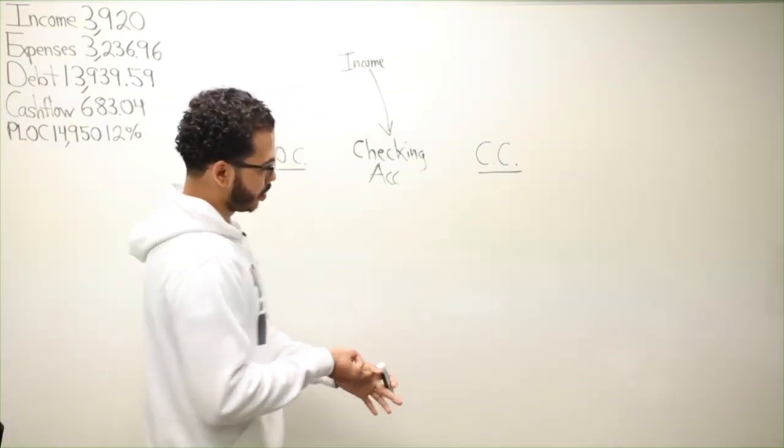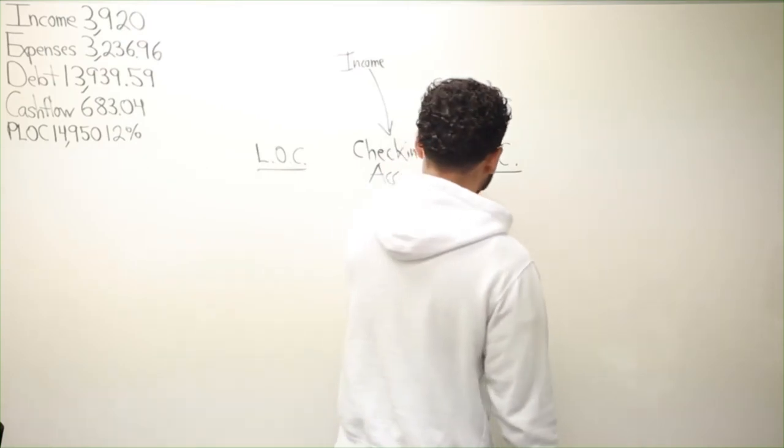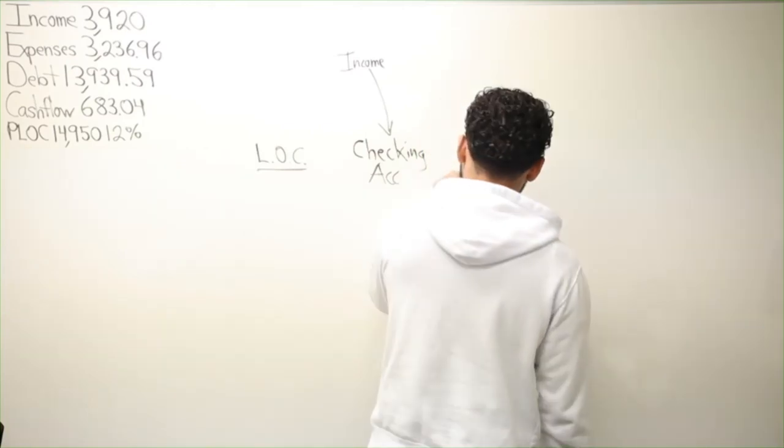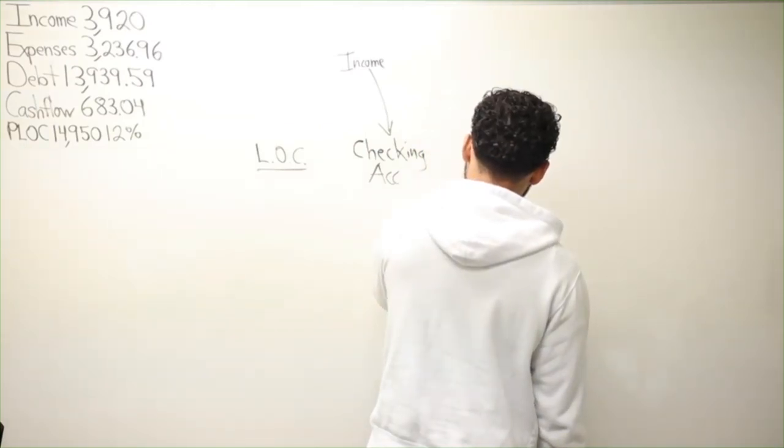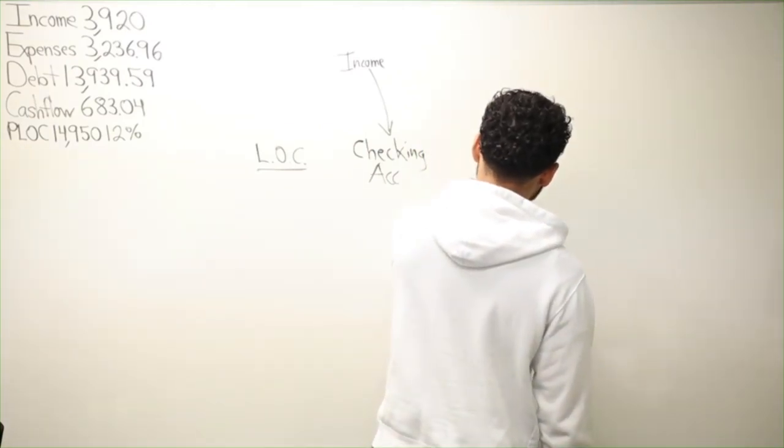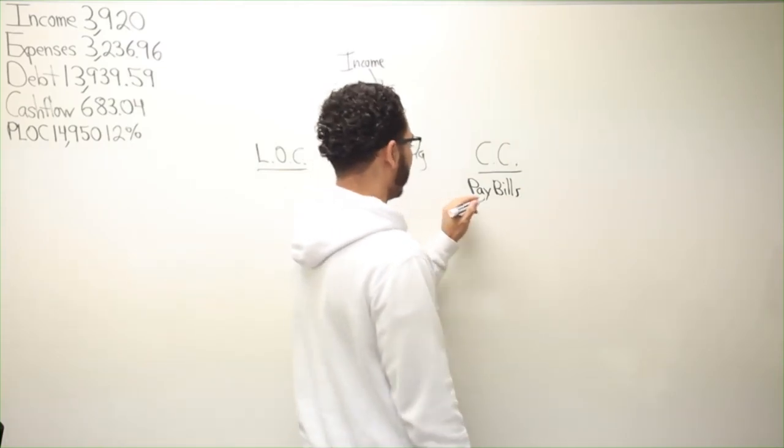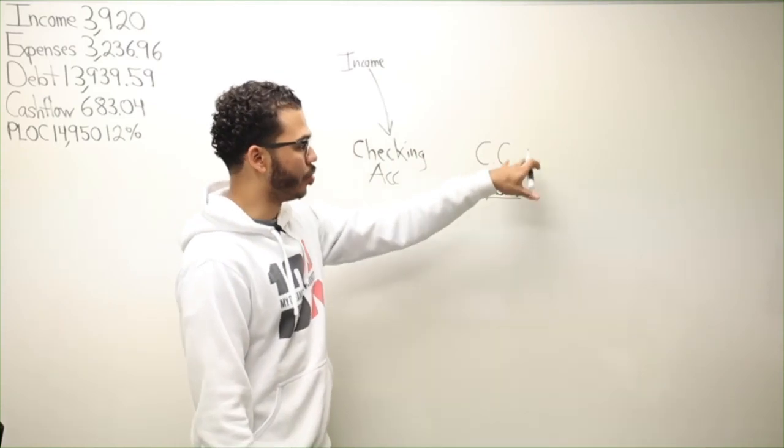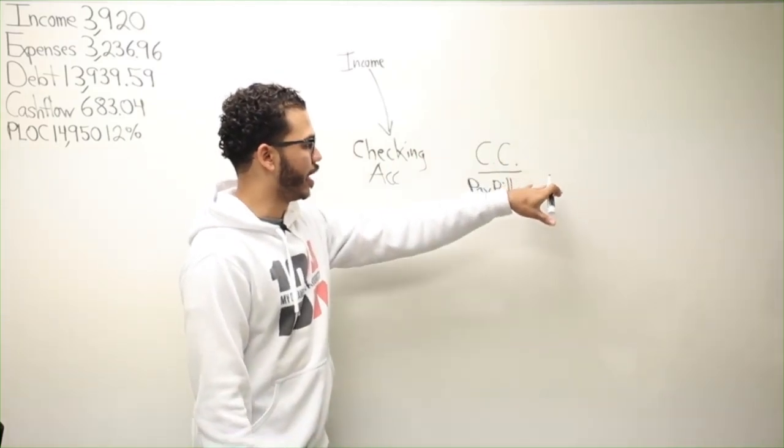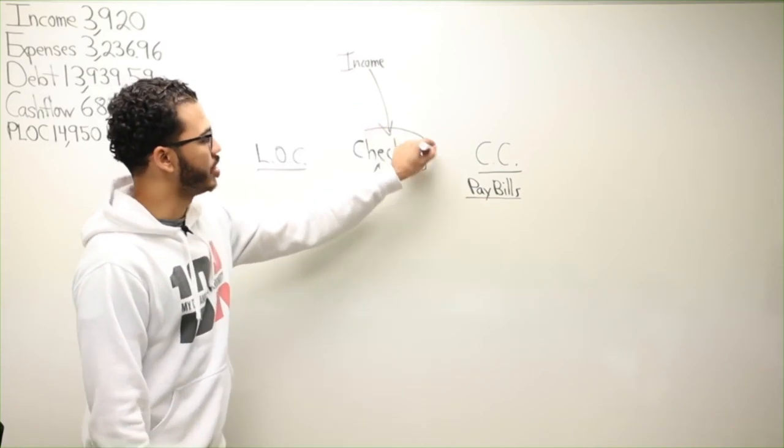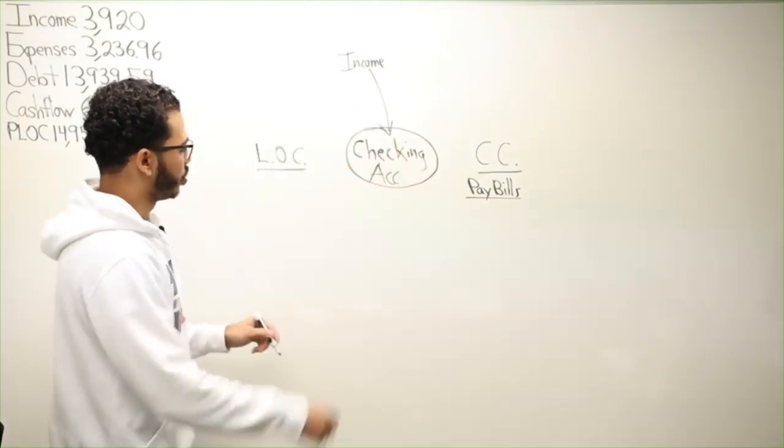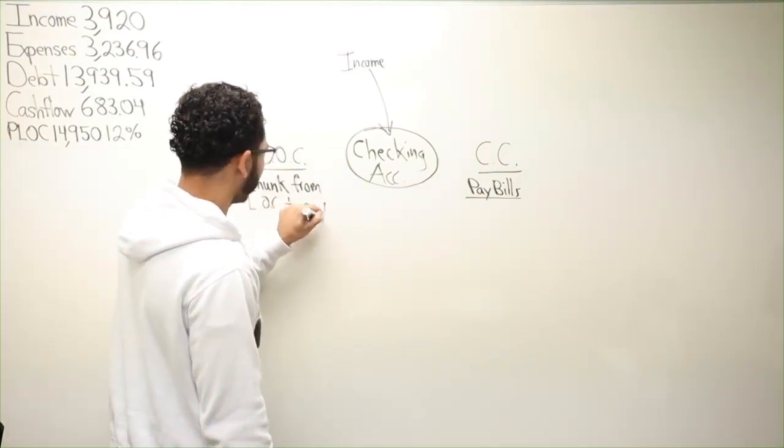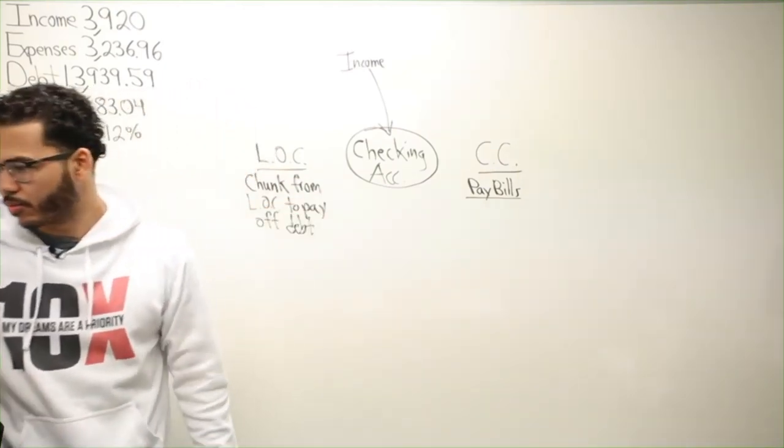What you would do for my friend Brogata - pretty cool name - is you have your bills that can be paid with a credit card. Pay your bills that can be paid with a credit card first. Then when this money comes in, you should have already made a chunk from the line of credit to pay off debt.